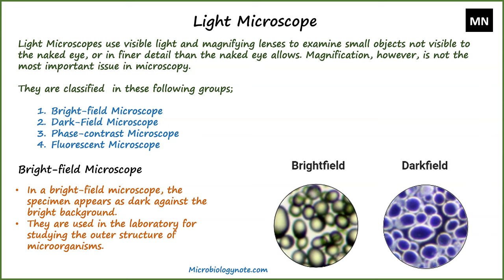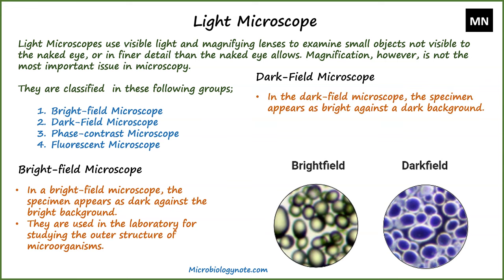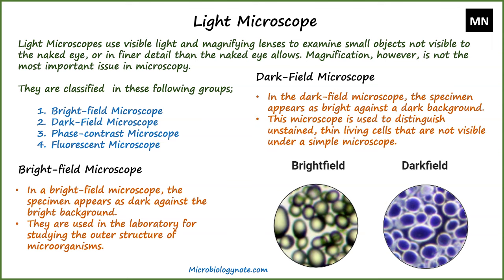The next light microscope is the dark field microscope. In the dark field microscope, the specimen appears bright against a dark background. This microscope is used to distinguish unstained, thin living cells that are not visible under a simple microscope. Looking at the images of specimens from two different microscopes, you can see the difference between them.